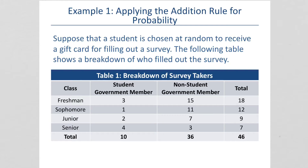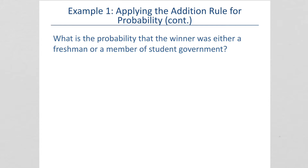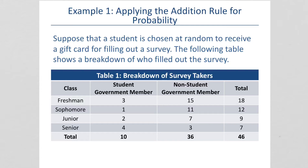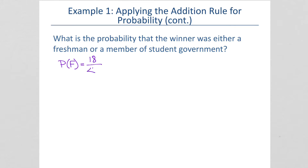Suppose that a student is chosen at random to receive a gift card for filling out a survey. The following table shows a breakdown of who filled out the survey. Of the freshmen, there were 3 student government members that filled it out and 15 non-student government members, for a total of 18, and so forth. What is the probability that the winner was either a freshman or a member of student government? We need to find the probability of being a freshman that filled it out. There were 18 total freshmen out of the total number of people that filled it out, which was 46. So the probability of being a freshman was 18 out of 46.